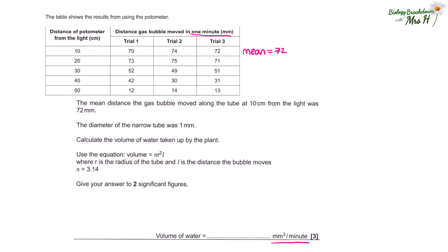Just check - this answer is in millimeter cubed per minute, which is the same as in the table, so that's good. We don't need to do any conversions. So r is 0.5 millimeters because the radius is obviously half of the diameter, and the diameter is one millimeter. So r squared is going to be 0.5 times 0.5, which is 0.25. l is the distance the bubble moved, so we will use the mean distance of 72 millimeters. Then we just substitute that into our equation: 3.14 times 0.25 times 72. That gives us an answer of 56.52, and we need that answer to be to two significant figures, so we round that up to 57.